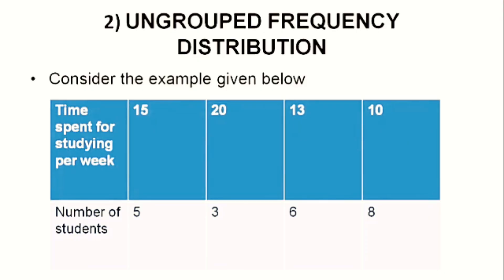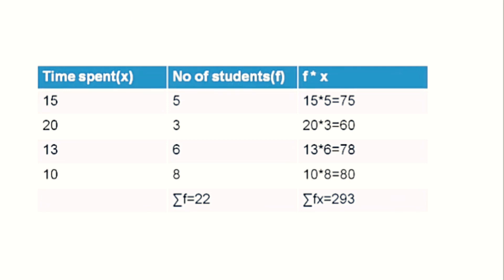For Case 2, if we are given an ungrouped frequency distribution, consider the example below. Time spent for studying per week and the number of students are given in a tabular form. Three students spend 15 hours, another three spend 30 hours, six spend 13 hours, and eight students spend 10 hours. We write this data in a tabular column with three columns: time spent (x), number of students (f), and the product fx. The third column gives: 15 × 5 = 75, 20 × 3 = 60, 13 × 6 = 78, and 10 × 8 = 80.